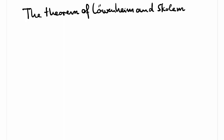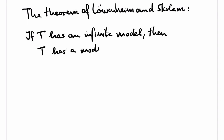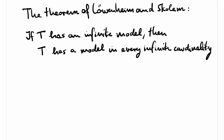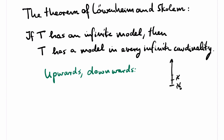The first theorem that we will prove in this course is the theorem of Löwenheim and Skolem, which states that if T has an infinite model, then it also has a model in every infinite cardinality. Note that this statement has implicitly two parts: there is Löwenheim-Skolem upwards and Löwenheim-Skolem downwards. To prove this, we need to apply a couple of fundamental techniques in model theory that we need all the time later.